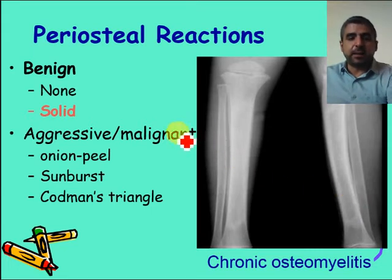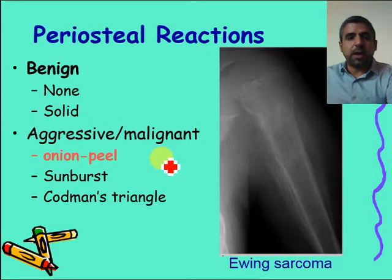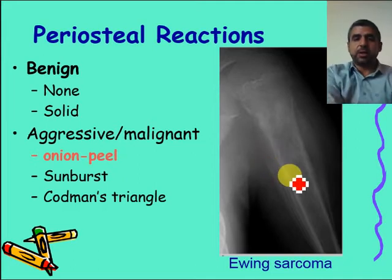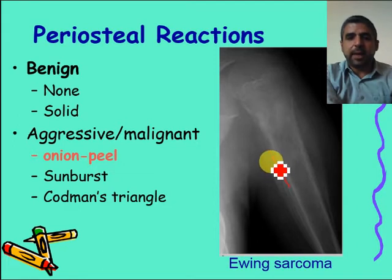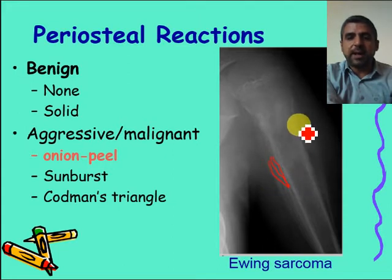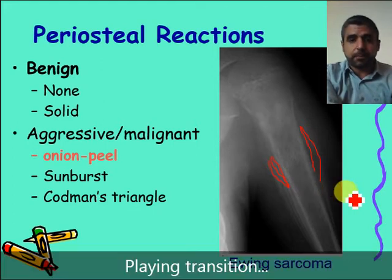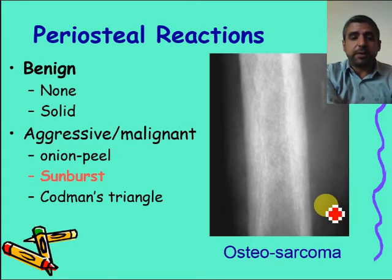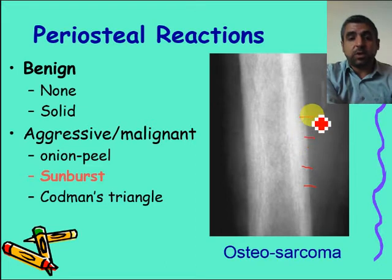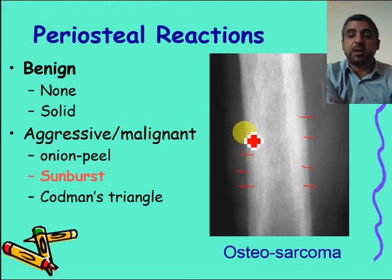Regarding aggressive or malignant types of periosteal reaction: first, the onion peel pattern — multiple layers of periosteal reaction, one following another, like an onion. This indicates an aggressive lesion, most commonly seen in Ewing sarcoma. The sunburst pattern shows rays radiating from the tumor. It may not be as prominent as the onion peel, but it is an indication of malignancy.